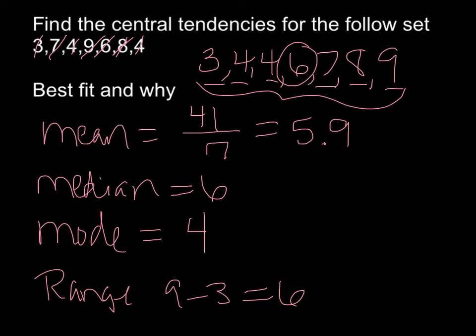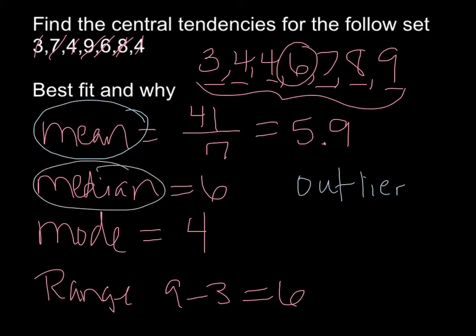Now the best fit. The best fit most of the time is going to be your mean, unless you have what we call an outlier. An outlier is a number that doesn't really fit. It's really small or really larger than the set itself. And this doesn't have an outlier. So mean or median would actually be a good measure for these numbers.